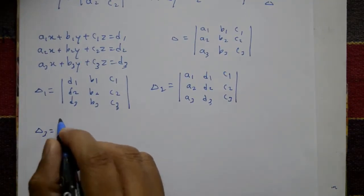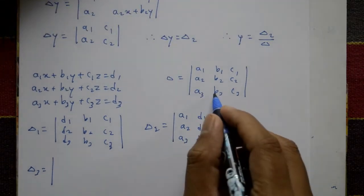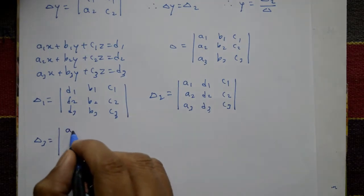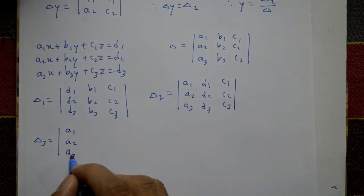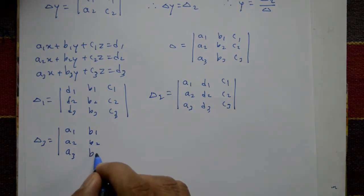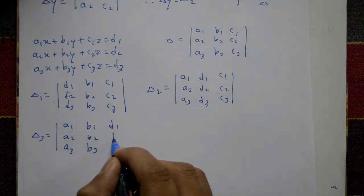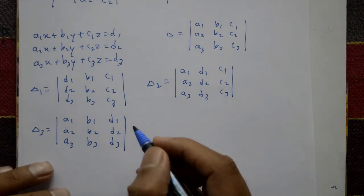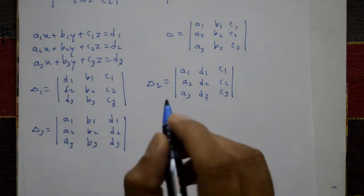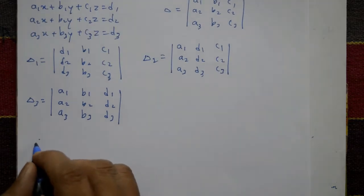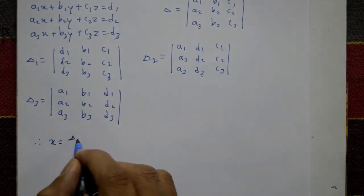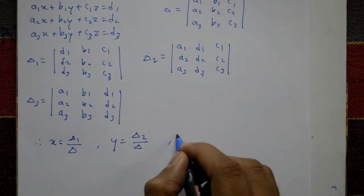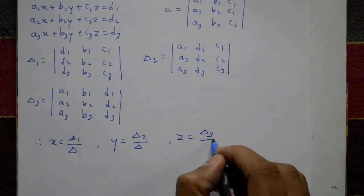Delta 3 is equal to keeping the first two columns the same and changing the third column to d1, d2, d3. The determinant is: a1, a2, a3 in the first column; b1, b2, b3 in the second column; and d1, d2, d3 in the third column. Now we find x, y, z values using the same method: x equals delta 1 by delta, y equals delta 2 by delta, and z equals delta 3 by delta.